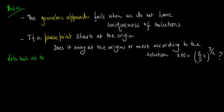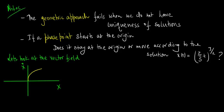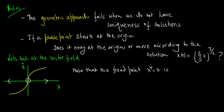Let us take a slightly closer look at the vector field. We now go ahead and plot x dot versus x. We find that the fixed point would be repelling from both ends. Note that the fixed point x star is equal to 0 is in fact an unstable fixed point.